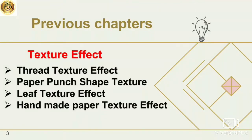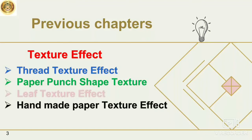We also learned different texture effects. That is thread texture effect, in which we used a thread for the given texture. Then a paper punch shape texture effect, in which we used paper punch shapes below the drawing sheet to create the texture. Next was leaf texture effect, in which we used a leaf below the drawing to create the texture. And handmade paper texture effect, in which we used a handmade paper below the drawing to create the texture.